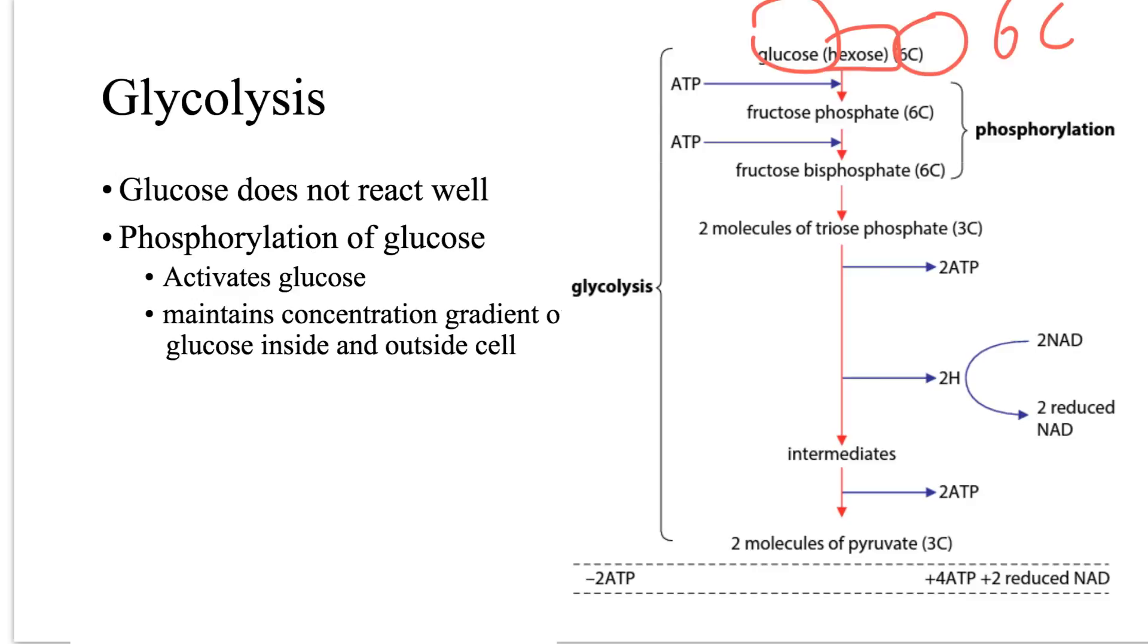Phosphorylation of glucose, in other words, adding phosphate to the glucose molecule has two purposes. One, activating the glucose, making it react well. Secondly, maintaining the glucose concentration in and out of the cells. So once glucose is phosphorylated, it's not chemically glucose anymore. So the concentration gradient can be maintained.